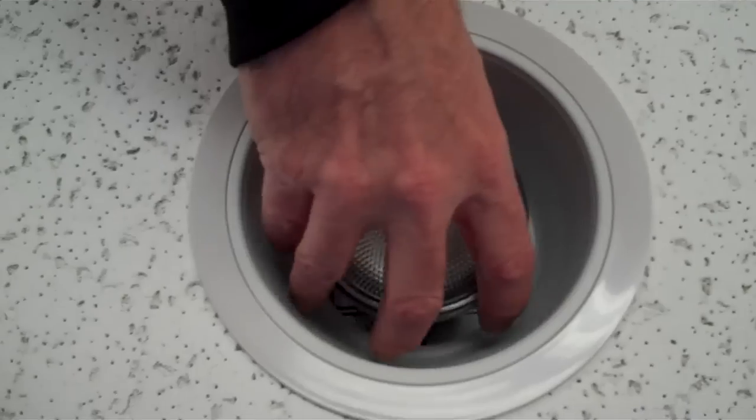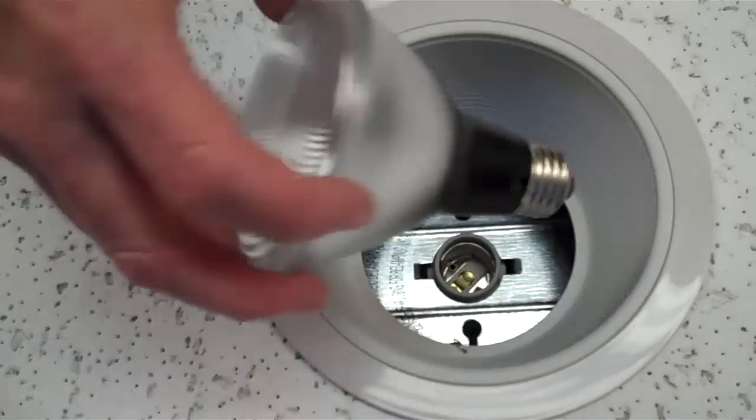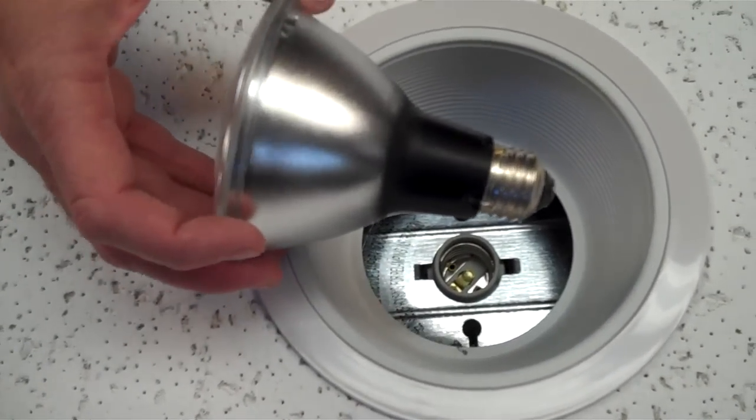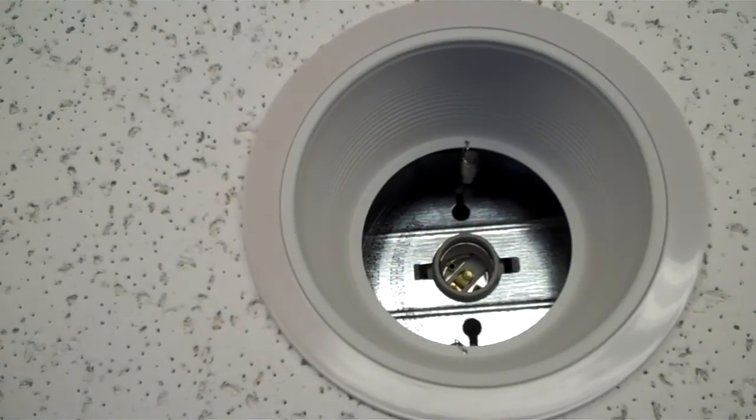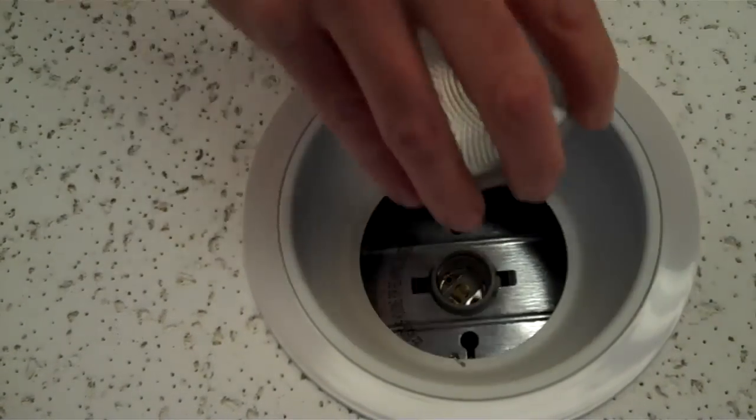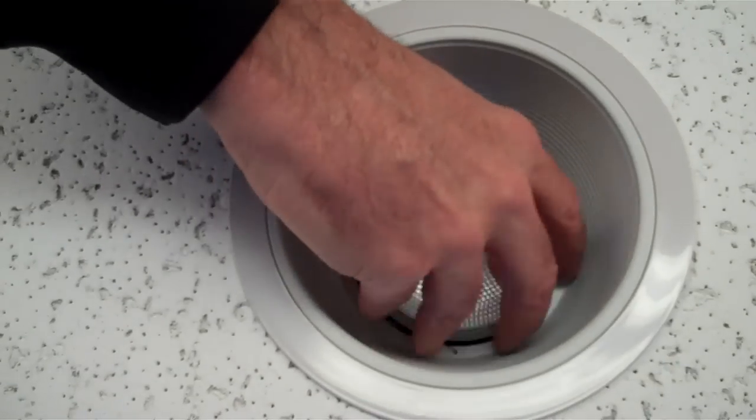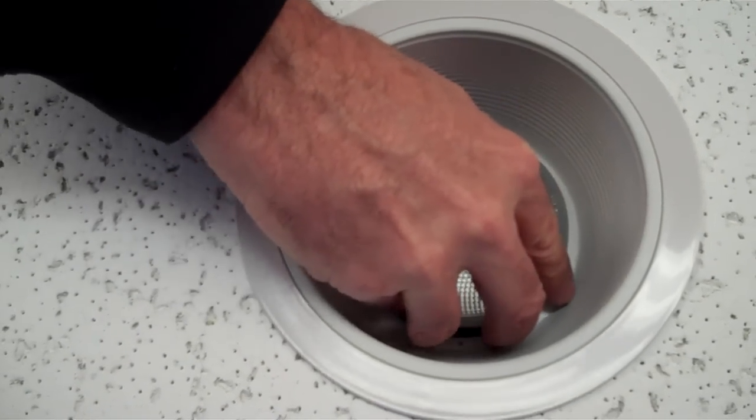In this case we've used a long neck par halogen but let me show you if we use a short neck halogen you'll find that that socket plate is pretty much right on where it needs to be. There you go.